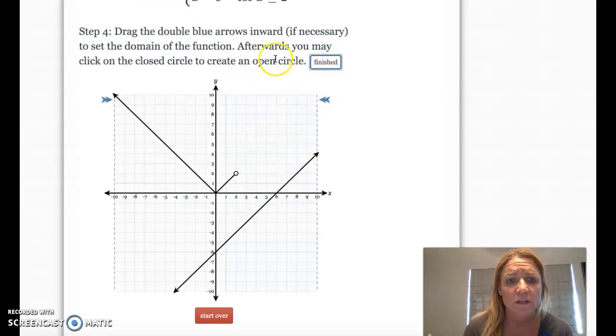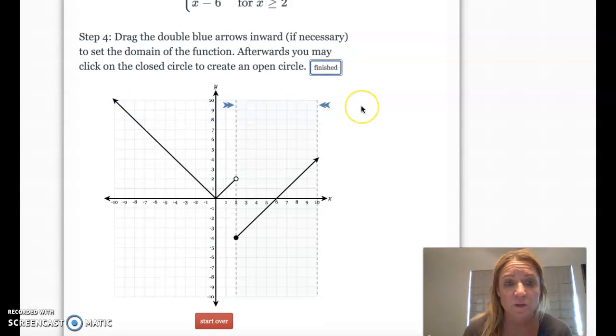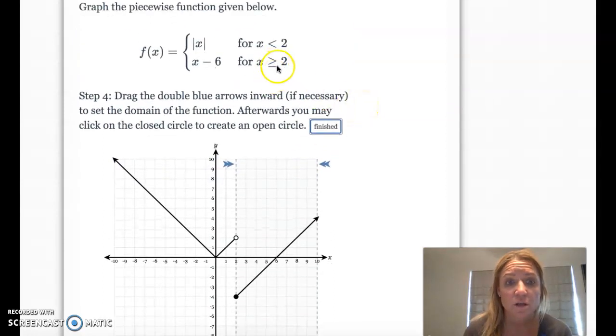And then we need to see what part of the graph. So this time I'm going to grab this one and slide it over to positive 2. Let me just make sure. Yeah, it's positive 2. And this one does have the equal part, so that point is filled in.